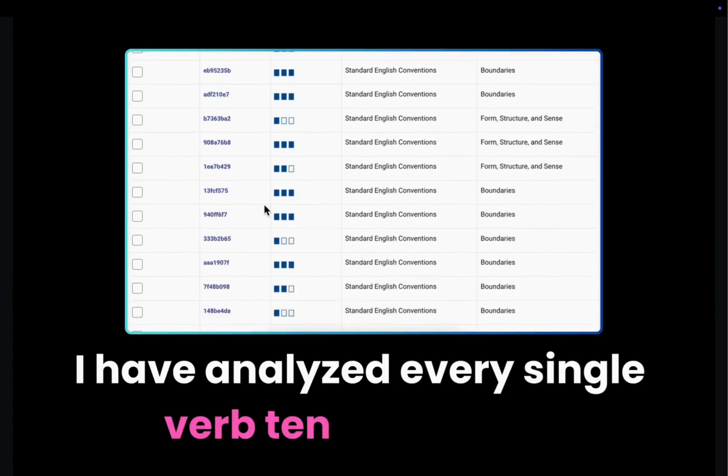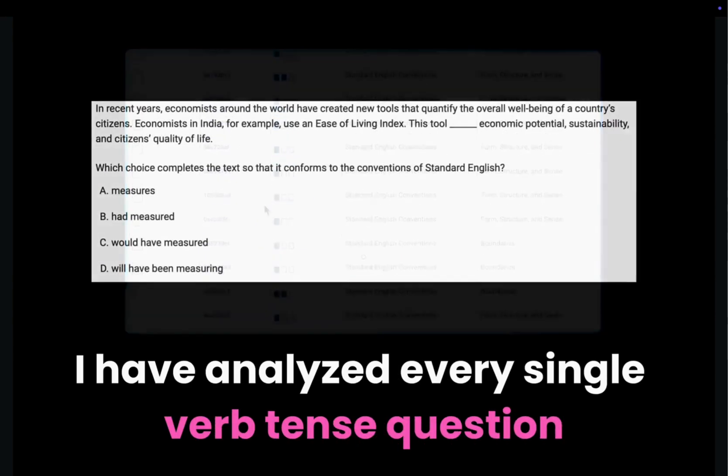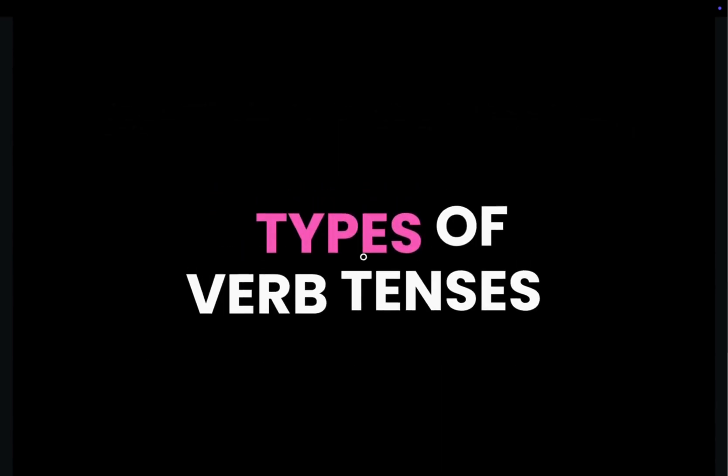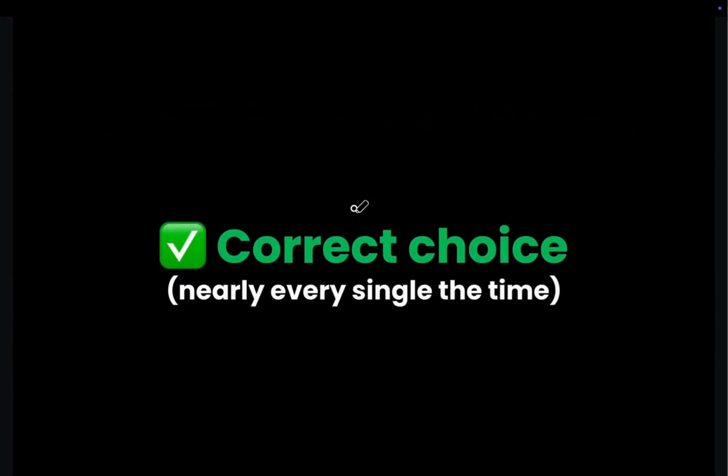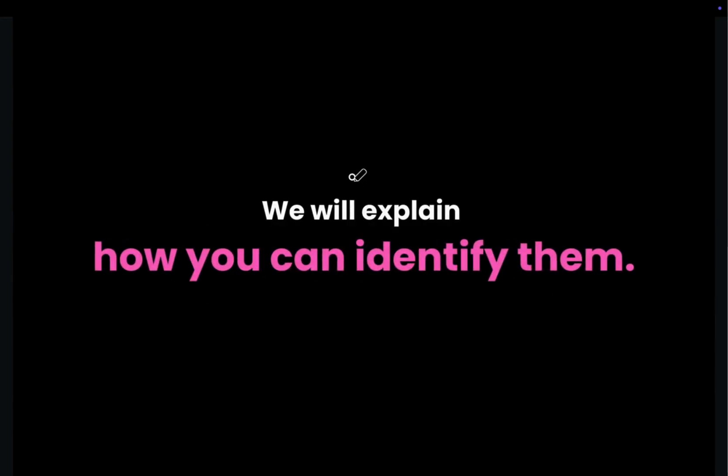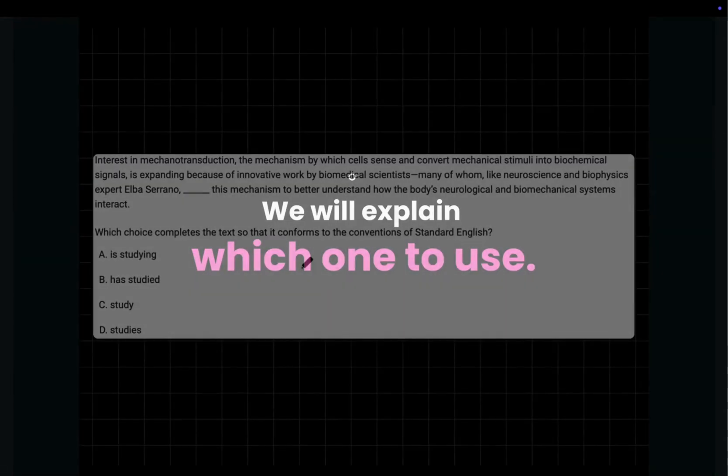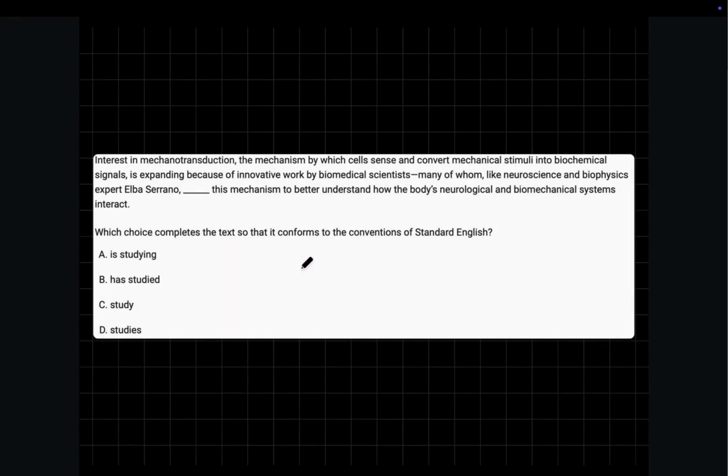I've analyzed every single verb tense question from College Board's list of public questions and I've seen eight types of verb tenses that are used as the correct choice nearly every single time. I'll explain how you can identify them, when to use them, and most importantly, which one to use. But before I do, take a look at this verb tense question. After looking at this question for less than 10 seconds, I spotted the correct answer.